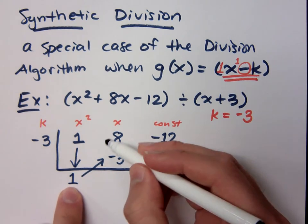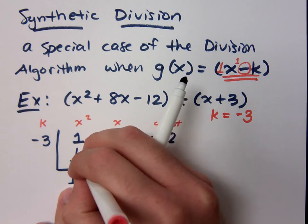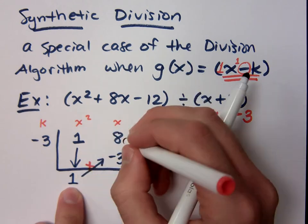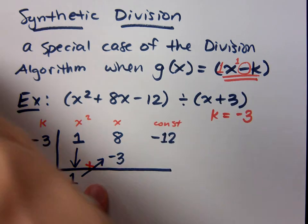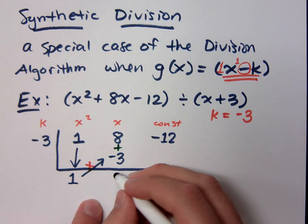Then, I'm going to add these guys together. So, this right here was multiplication. And now, this piece up here is going to be adds. So, what's 8 and negative 3? 5.